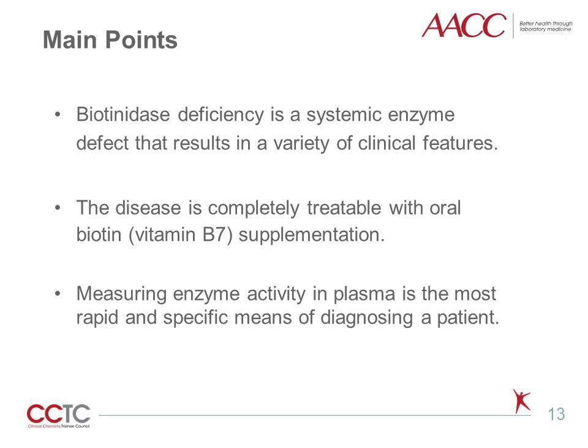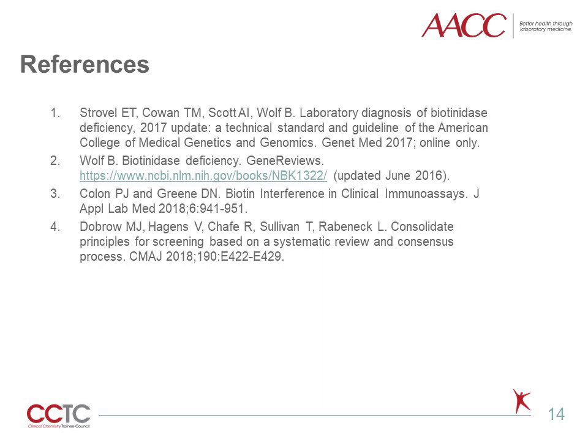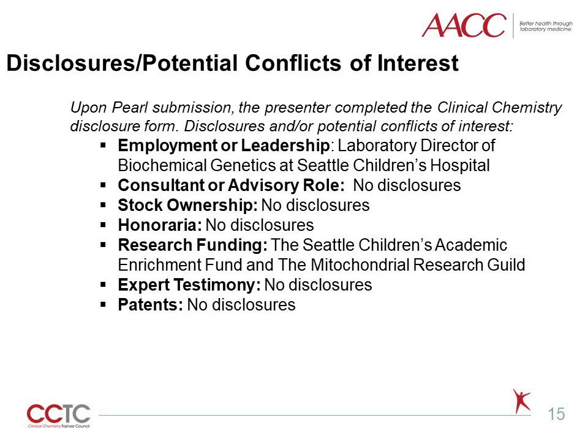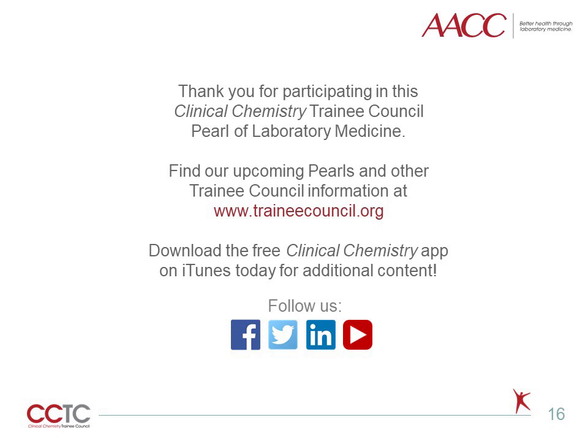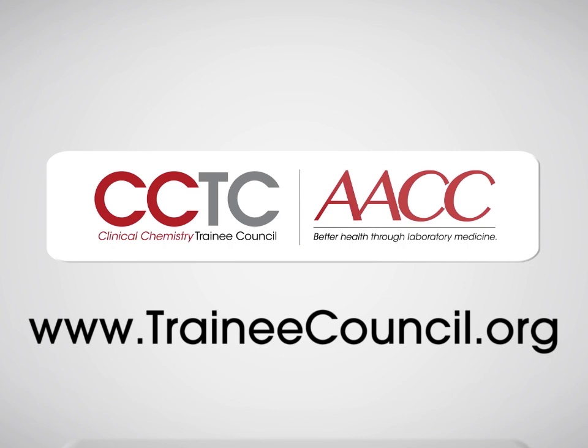Here are the three main points to take away from this presentation. One, biotinidase deficiency is a systemic enzyme defect that results in a variety of clinical features. Two, the disease is completely treatable with oral biotin, vitamin B7 supplementation. Three, measuring enzyme activity in plasma is the most rapid and specific means of diagnosing a patient. Thank you for joining me on this Pearl of Laboratory Medicine on Biotinidase Deficiency. For more like this, as well as articles, podcasts, and more, please visit the Trainee Council at traineecouncil.org.